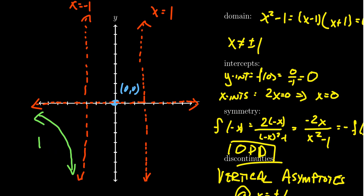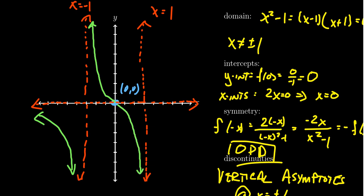Between x = -1 and x = 0, the function is decreasing, going from the asymptote down to the x-intercept. The second derivative is positive there, so it should be concave up. Past the origin, we're still decreasing because f′ is negative, but the second derivative is now negative, so it should be concave downward — making the origin a point of inflection. For x > 1, the function is still decreasing but concave upward, and we're approaching our horizontal asymptote from above.